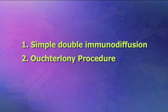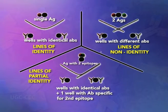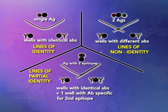The Ouchterlony procedure is double diffusion in two dimensions and is the immunodiffusion method most widely employed. It helps to compare different antigens and antisera directly. Agar gel is poured on a slide and wells are cut using a template. The antiserum is placed in the central well and different antigens in the surrounding wells. If two adjacent antigens are identical, the lines of precipitate will fuse and provide a V-shaped curve. If they are unrelated, the lines will cross each other and provide an X-shaped curve. Cross-reaction or partial identity is indicated by spur formation, also providing a V-shaped curve.